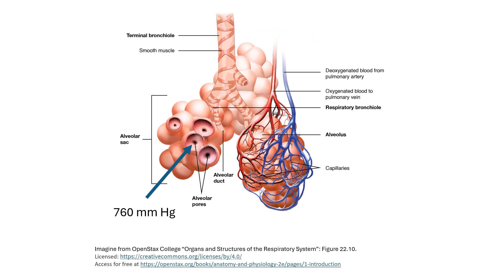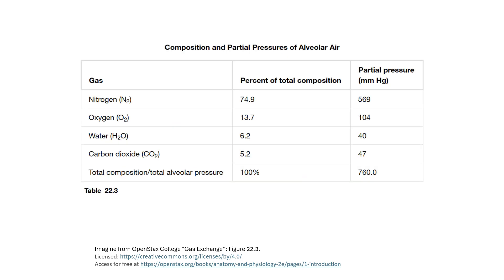Total air pressure within our alveoli in between breaths is 760 millimeters of mercury, which is the same total air pressure within the atmosphere. While it is true that total air pressure within the alveoli is the same as the atmosphere, if we look at oxygen's partial pressure within the air in the alveoli, we will notice that it's only around 100 millimeters of mercury, and in the atmosphere it's around 160.